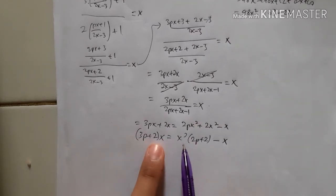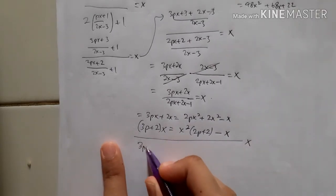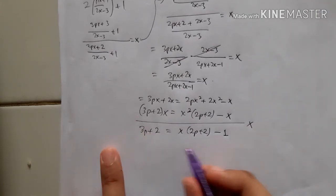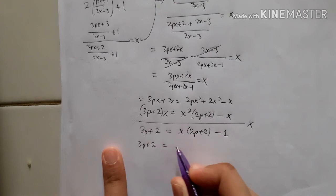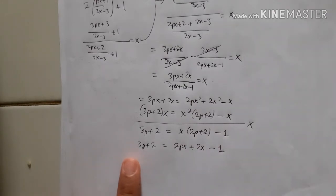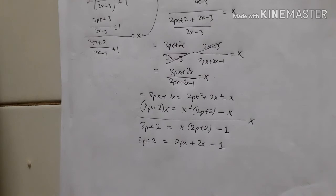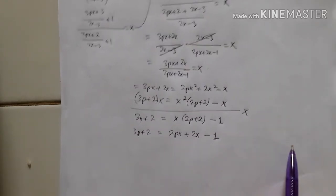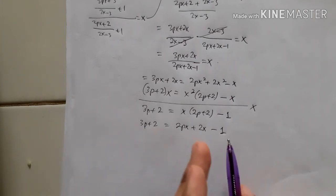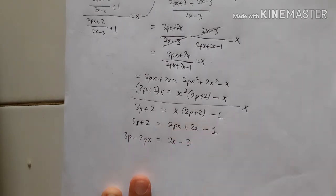Now we factorize. Dividing everything by x gives: 3p + 2 = x(2p + 2) - 1. Expanding and rearranging, we collect all terms with p on one side and terms without p on the other: 3p - 2px - 2px = 2x - 3.